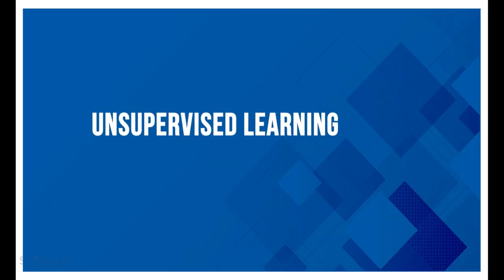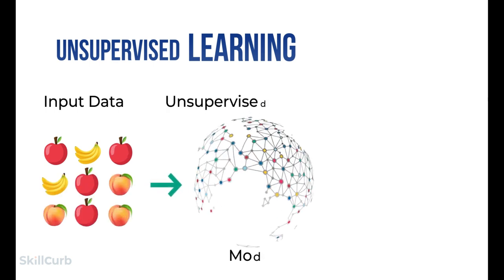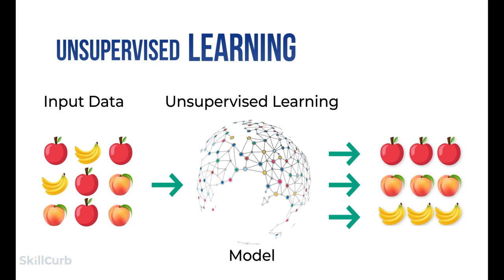Unlike supervised learning, in unsupervised learning there is no labeled training data. This form of machine learning is data-driven, based on the properties of data. The trained model finds patterns in the data and gives the respective outcome. The most famous example is a recommender system — people who use YouTube or Netflix deal with unsupervised learning daily, as the algorithm recommends new videos or movies based on previously watched content. The output is in the form of clusters.